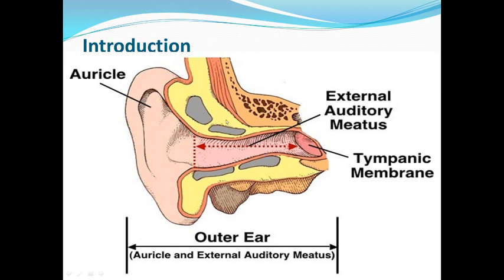In this video lecture, we will focus only on the external ear. As you can see in this figure, the ear is divided into 3 parts: the external ear, the middle ear, and the internal ear. In this figure, only the external ear is visible, which consists of 2 very important parts: the auricle or pinna, and the external acoustic meatus or external auditory meatus.